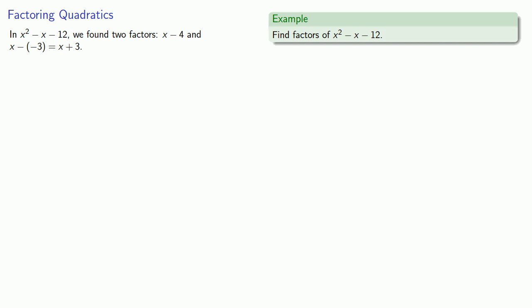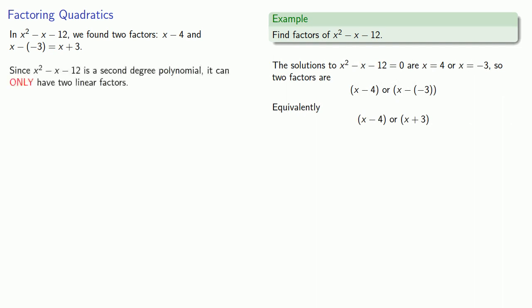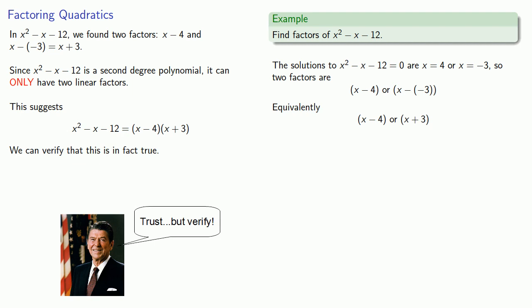Now, in general, the root theorem will give us some factors. But we want all factors. So let's think about that a little bit more. In x squared minus x minus 12, we found two factors, x minus 4 and x plus 3. Since x squared minus x minus 12 is a second-degree polynomial, it can only have two linear factors. And what this suggests is that x squared minus x minus 12 has to be x minus 4 times x plus 3. And if we multiply out the right-hand side, we can verify that this is in fact true.